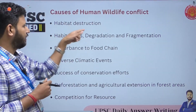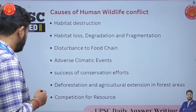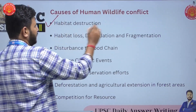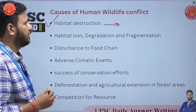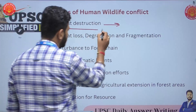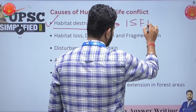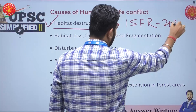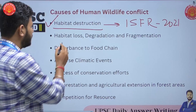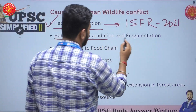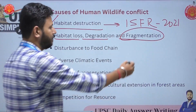For example, habitat destruction — everyone is going to write that there is a destruction of habitat and that is the reason why most wild animals come into human settlements. But along with writing this point, you should also have some facts from India, such as the State of the Forest Report 2021. Always try to give supporting facts. Then there is habitat loss, degradation and fragmentation of wildlife habitat because of developmental projects.